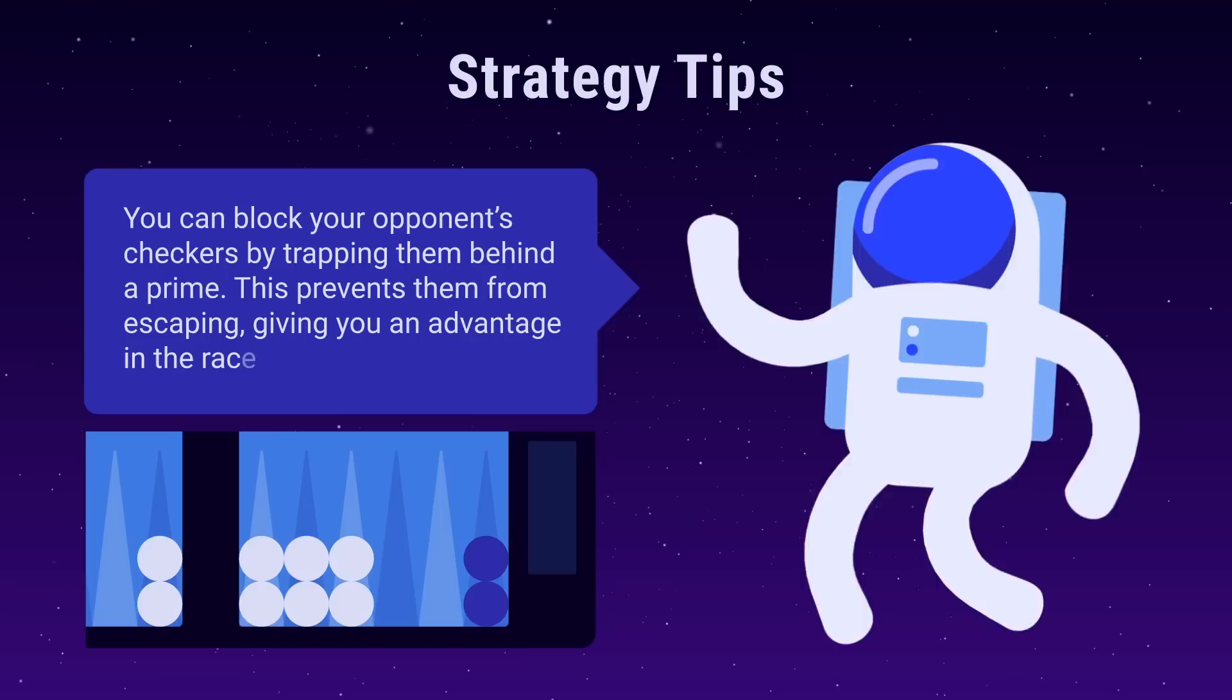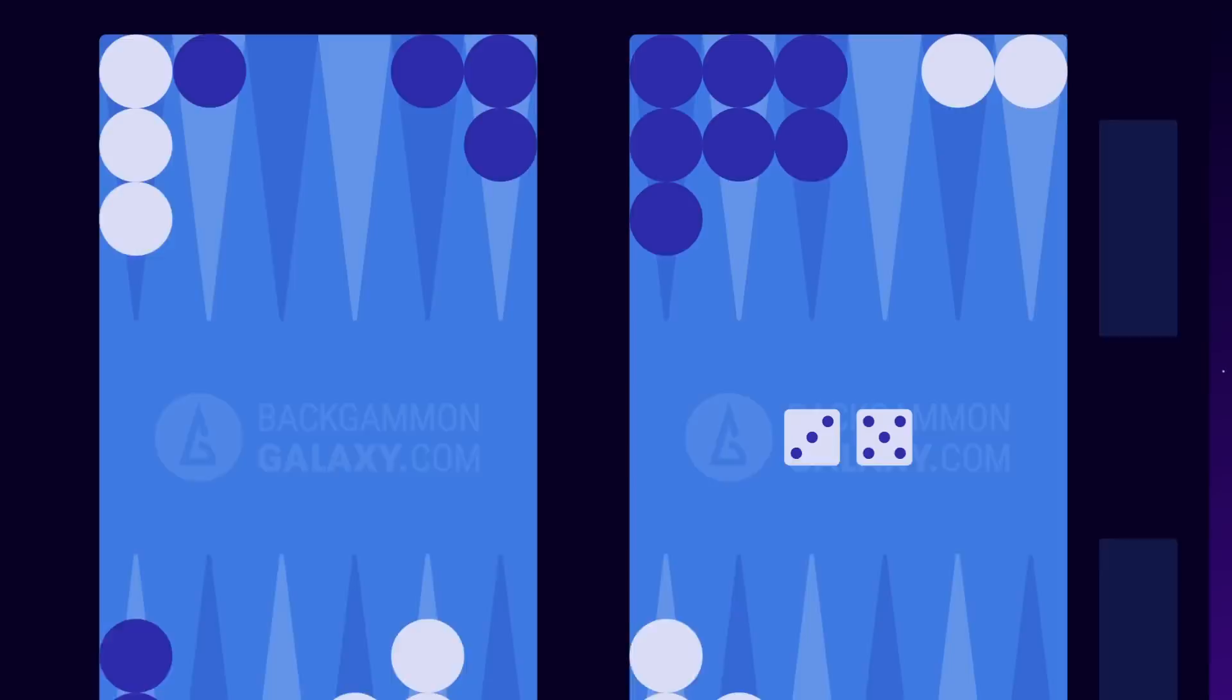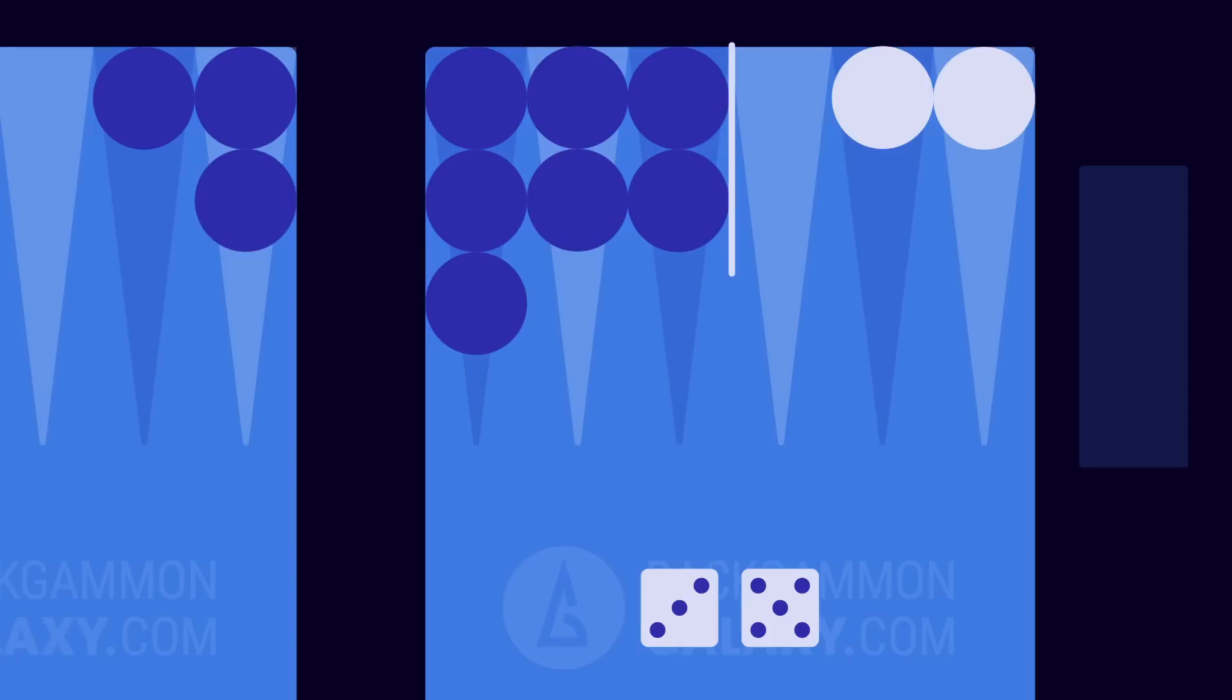We've traveled forward in time, and now the position looks like this. White rolls 3-5. As you can see, white is now unable to move any of his backmost checkers as blue is occupying these points with a four prime. Instead, white chooses another move, which we'll talk about in the following section.